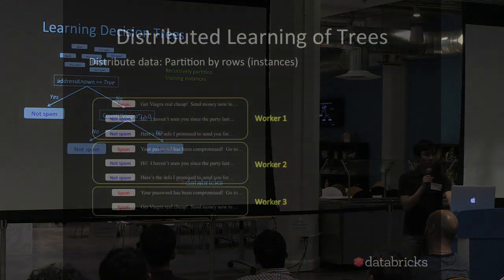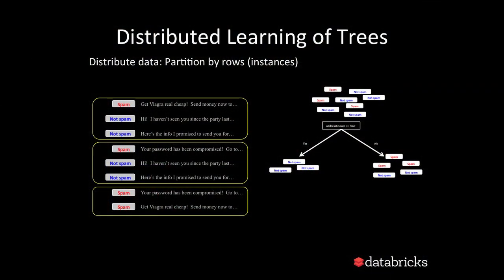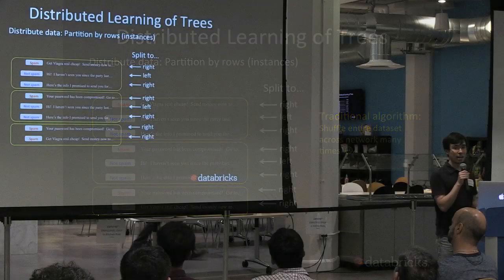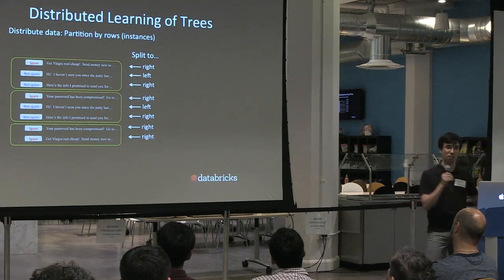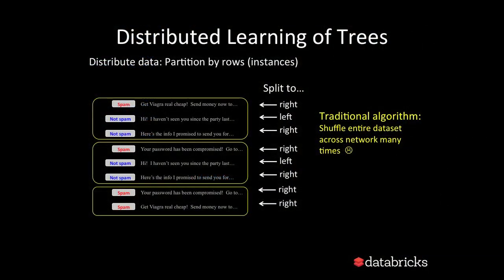You might start to see the problem when thinking about distributing data. In big ML problems you have tons of instances, so it makes sense to partition by rows across workers. But compare this to the tree recursively partitioning data left and right — you don't know how splits will partition your data as you learn. Each worker has some data points that should go left and some right. A naive implementation would collect all instances going left onto one group of machines, and so on — basically shuffling the entire dataset across the network many times. Of course we're not going to do that.